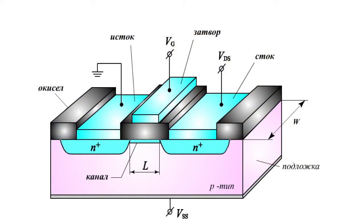When voltage that is negative with respect to the inlet, and thus to the crystal, is supplied to the gate, a transverse electric field is created in the channel. Under the effect of such field, the conduction electrons are pushed out of the channel, into the inlet and outlet areas, and into the crystal. The channel is depleted of electrons, its resistance increases, and the outlet current goes down. The bigger the negative voltage at the gate, the lower the current would be. This transistor mode is called depletion mode.